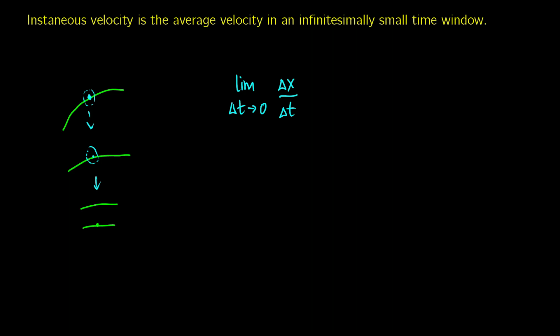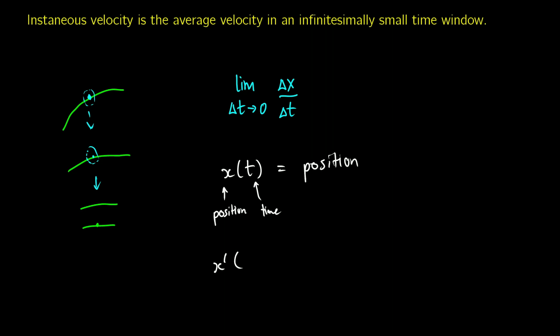You'll be given a function, usually called x of t, where x is the position and t is time. When you take the derivative of it — x prime of t — you get velocity. You do need a little bit of calculus to do this. If you're taking an intro physics course, you should be taking a calculus course alongside it. I'll show you how with a practice question.